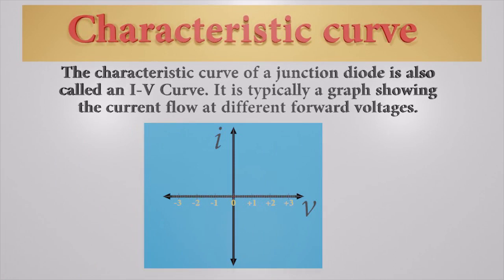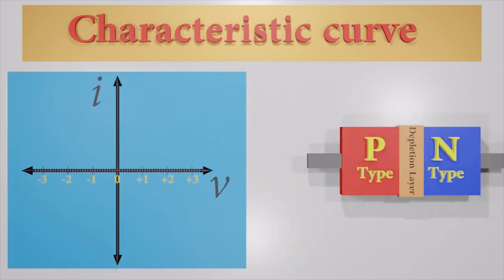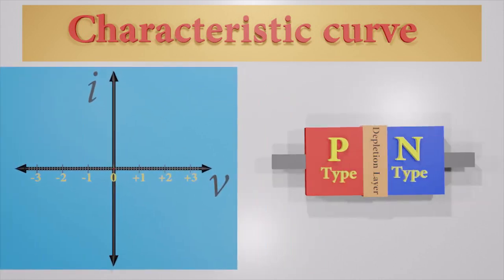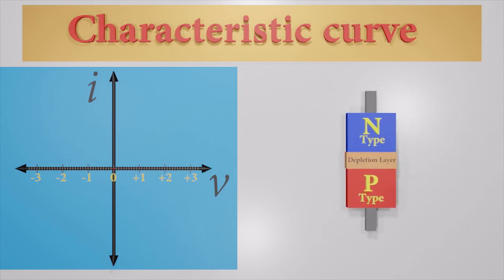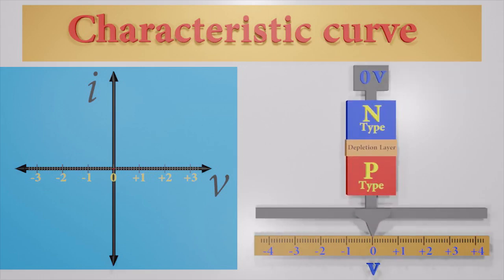We know the diode has three regions: p-type end, n-type end, and the middle depletion layer. Let's set the n-type end at zero volts and make the voltage of the p-end a variable. We are using the voltage of the p-end to plot the graph.